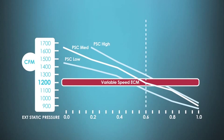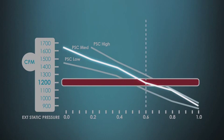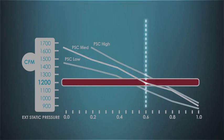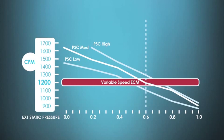A PSC motor doesn't even come close. Looking at the middle line — the medium speed on a PSC motor — we see that the only time it's even close to making 1200 CFM is at 0.6 static, and as external static pressure goes up, airflow continues to go down. Manufacturers rate their equipment for efficiency and capacity according to AHRI at usually around 0.5 or less total external static pressure. So if the PSC motor has to run at higher static pressure to make the same airflow, the system is actually running at under capacity and under efficiency. The variable speed motor actually maintains capacity and efficiency using constant airflow technology.